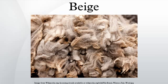Buff is a pale yellow-brown color that got its name from the color of buffed leather. According to the Oxford English Dictionary, buff as a descriptor of a color was first used in the London Gazette of 1686, describing a uniform as a red coat with a buff color lining.